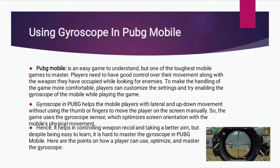Gyroscope use in PUBG Mobile: PUBG Mobile is an easy game to understand, but one of the toughest mobile games to master. Players need good control over their movement along with the weapon they have while looking for enemies. To make handling more comfortable, players can customize the settings and enable the gyroscope while playing. Gyroscope in PUBG helps mobile players with lateral and up-down movement without using the thumb or fingers to move manually, as the game optimizes screen orientation with the mobile's physical movement.